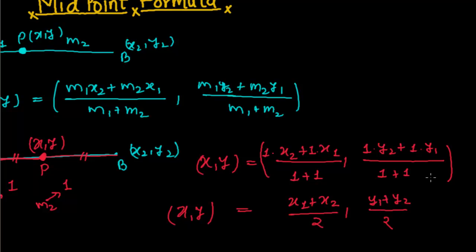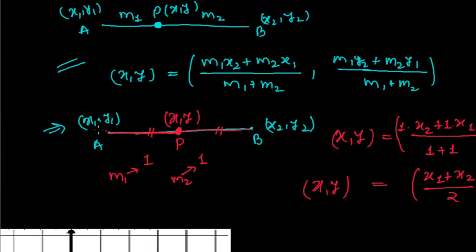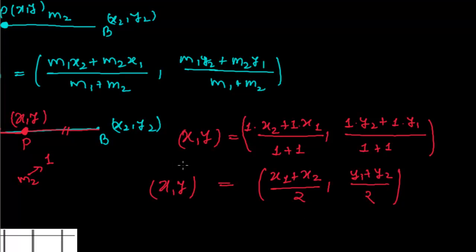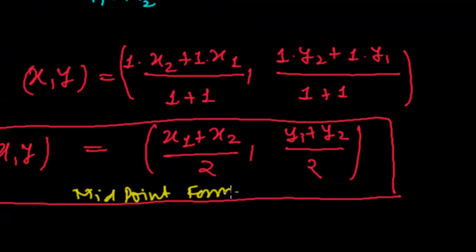So this formula — where x = (x1 + x2) / 2 and y = (y1 + y2) / 2 — is called the midpoint formula. What we're seeing here is that this is exactly an average, the same mean you've learned in statistics. It is exactly the mean of the two points: the average of x1 and x2 gives the x-coordinate, and the average of y1 and y2 gives the y-coordinate of the midpoint.